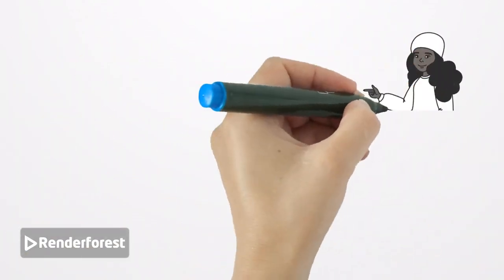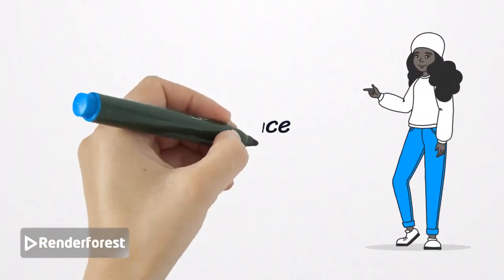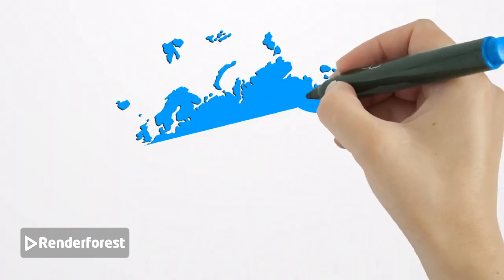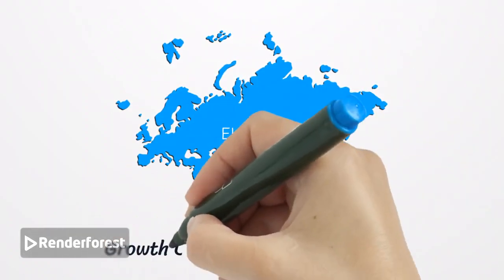The people, initially wary of their new queen, soon came to both fear and depend on her. Under her rule, Eldoria flourished in its own dark way, its borders expanding as neighboring realms fell under her influence.